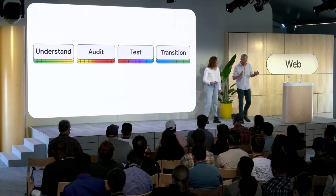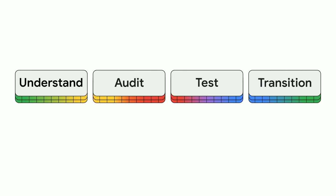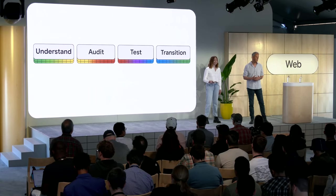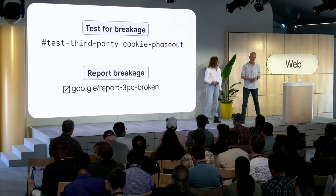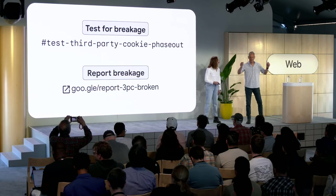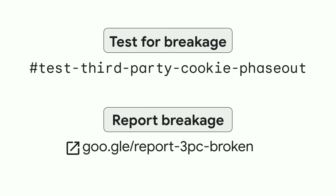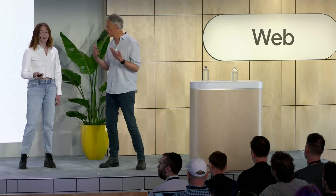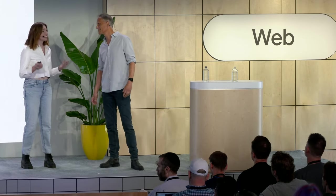To recap: Chrome plans to begin phasing out third-party cookies in early 2025, which means you need to audit your site for third-party cookies right now and test for breakage. Whatever you do with cookies on your site, it really makes sense right now to transition to these alternatives like CHIPS and Related Website Sets. If you only do one thing after this session, use the phase-out flag to test for breakage and report breakage using the link shown. So Aaron, why are third-party cookies actually being deprecated?